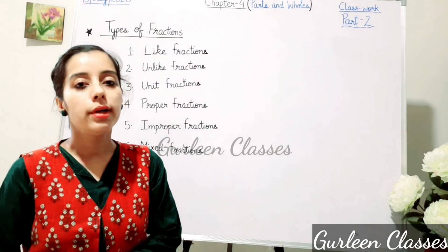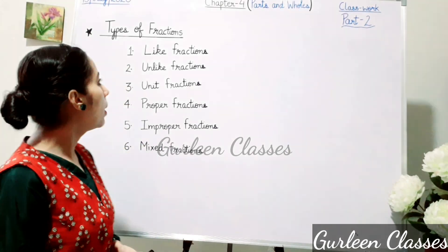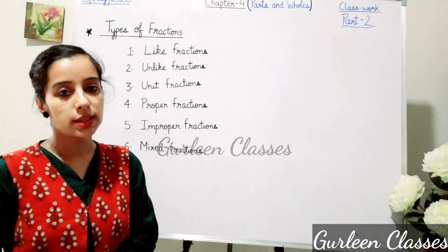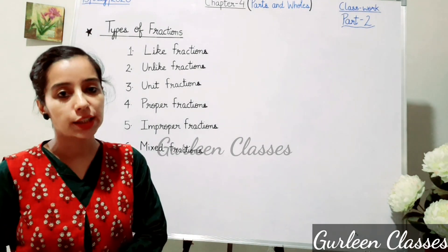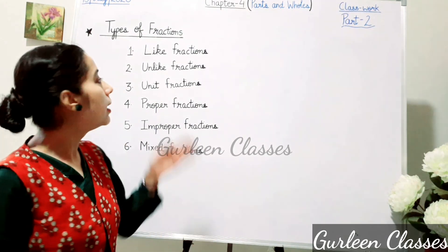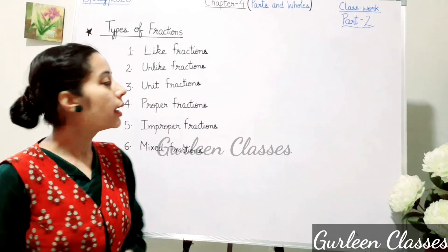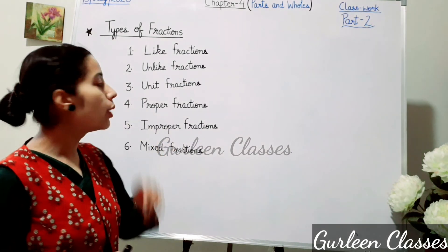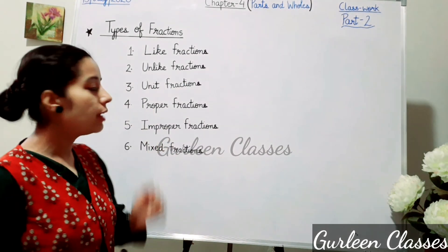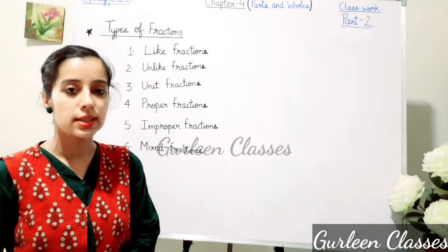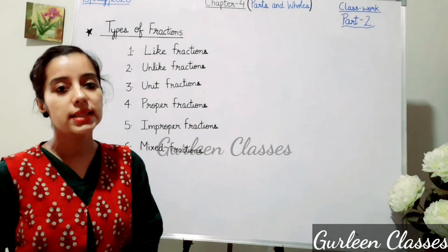Now, different types of fractions. Number 1, like fractions. Number 2, unlike fractions. Number 3, unit fractions. Number 4, proper fractions. Number 5, improper fractions. Number 6, mixed fractions.